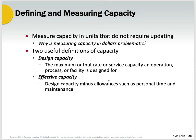Here we're getting to the meat of it — we want to define and measure capacity. We look at two things: design capacity and effective capacity. We want to measure capacity in units that do not require updating; we don't want to measure it in dollars. County people love dollars, but in operations we don't inventory dollars — we inventory units. Units take up physical space, they have weight. We make things in operations, so that's what we want to base our capacity on. Design capacity and effective capacity are the two things.